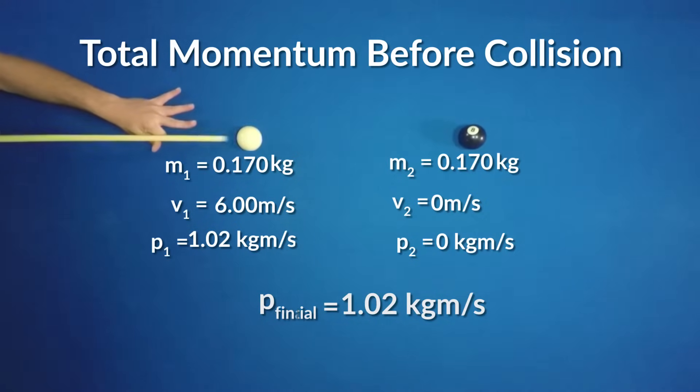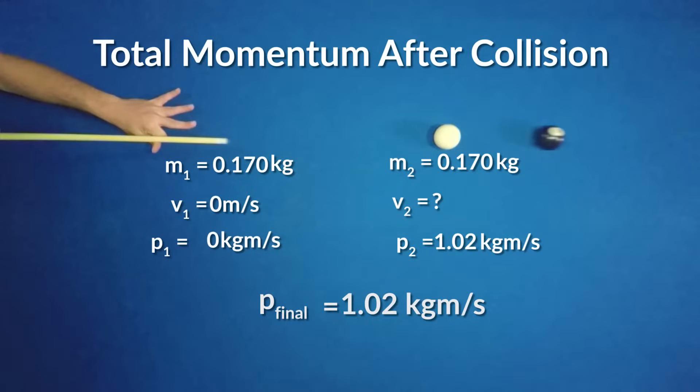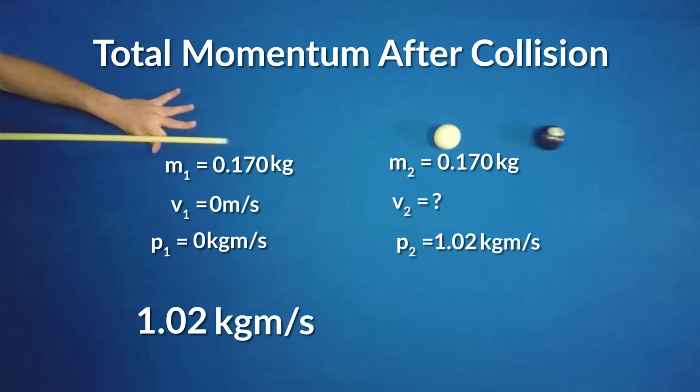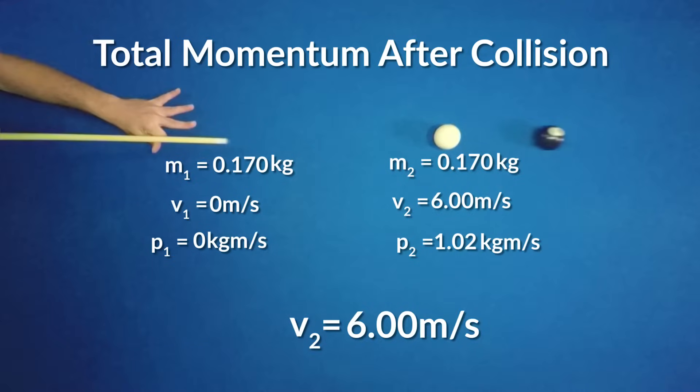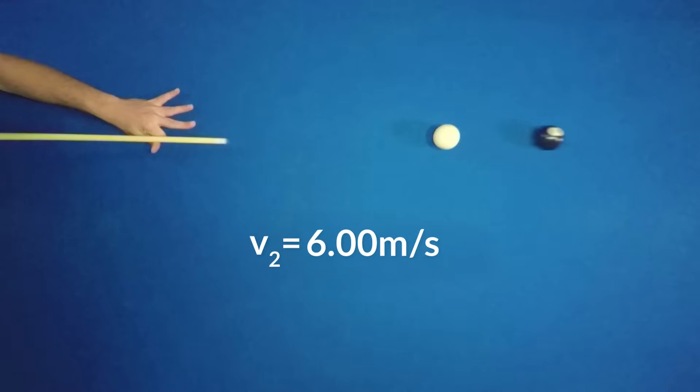Now what about the final velocity of the eight ball? Since the collision brings the cue ball to rest, the eight ball carries all the system's momentum. That means we can divide 1.02 kilograms meters per second by 0.170 kilograms, the eight ball's mass, to find its velocity. And that turns out to be 6.00 meters per second, the same as the cue ball had at first.